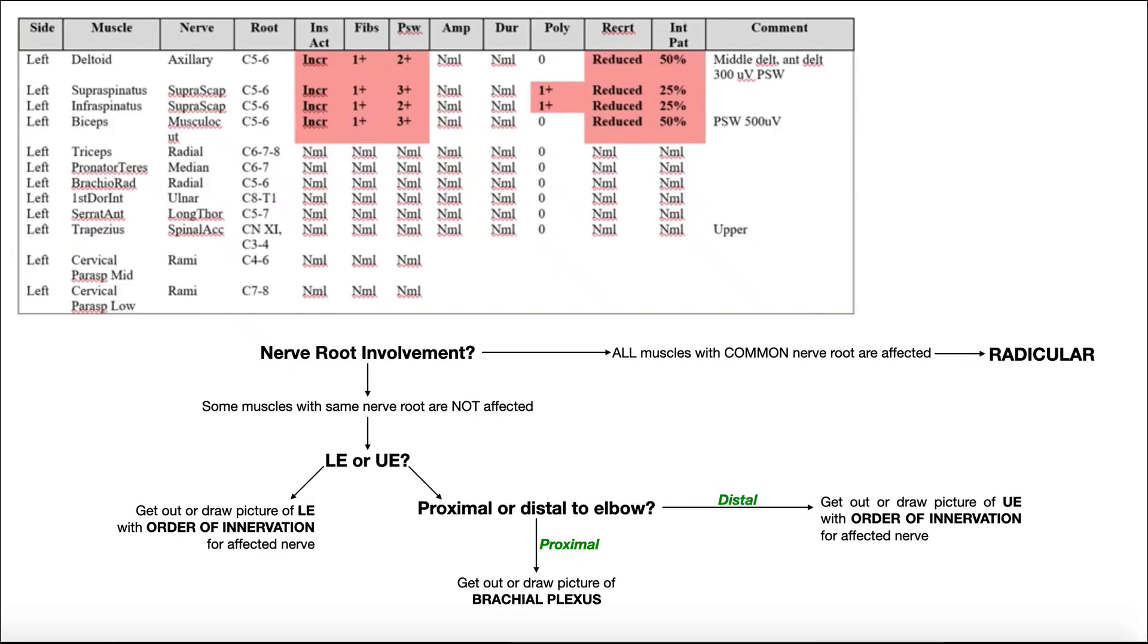In the previous videos, we've been looking at the sample EMG studies, and we've been trying to figure out what type of nerve injury there is. Is it a demyelination injury? Is it axonal injury? So now we're going to switch gears and now figure out where the nerve injury is.